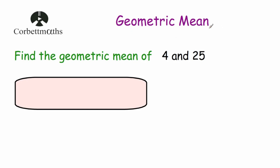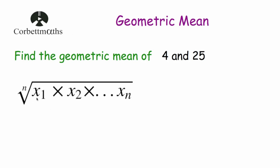Now the mean we're probably most familiar with is the arithmetic mean. That's the mean we get when we add up a load of numbers and divide by the number of numbers. Now the geometric mean is found by multiplying the numbers instead, and if there are n numbers, we take the nth root. So the formula says you multiply all n numbers together and then take the nth root.